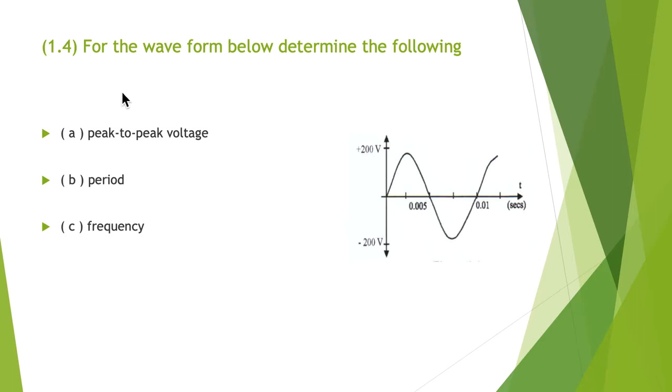Question 1.4: For the waveform below, determine the following - the peak to peak voltage, the period, and the frequency. You're going to have to remember some of the characteristics around a sine wave. First hint is peak to peak. Remember our peak value is this one here. We have a positive 200 volts making up one half, a negative 200 volts making up the other half. So overall we have 400 volts peak to peak.